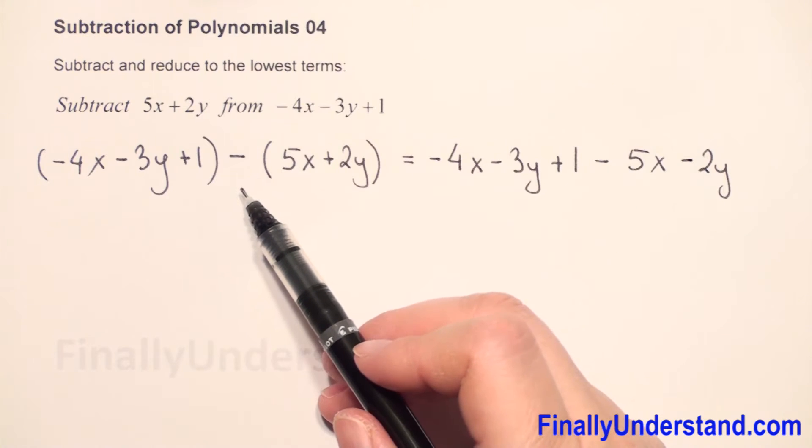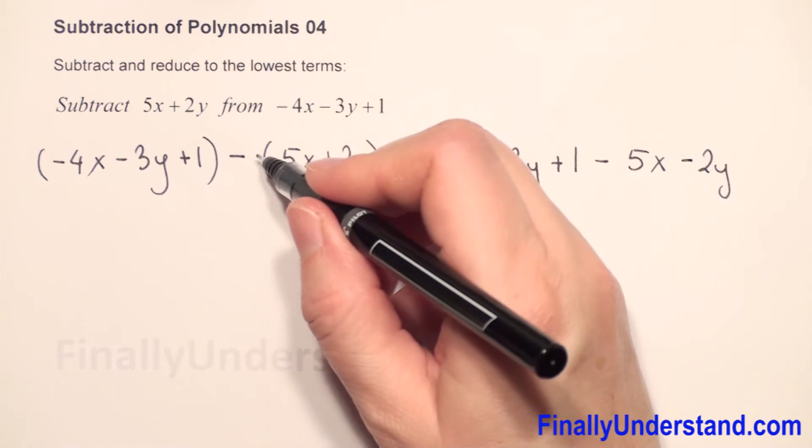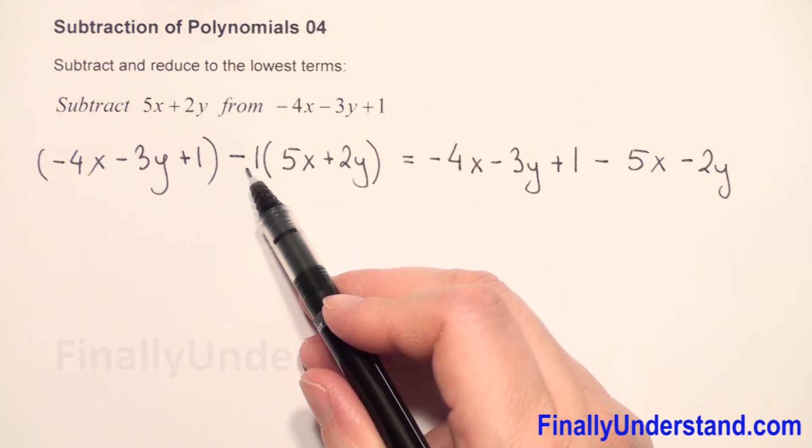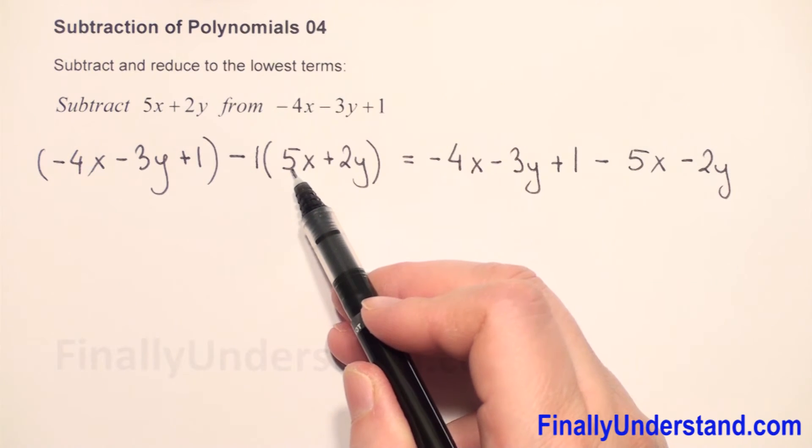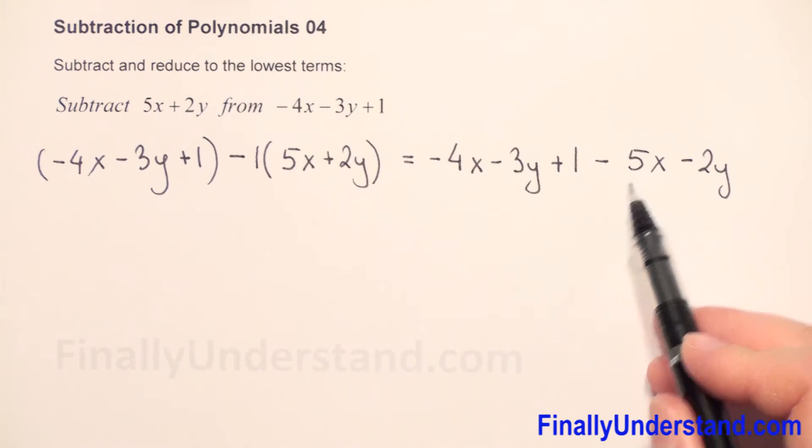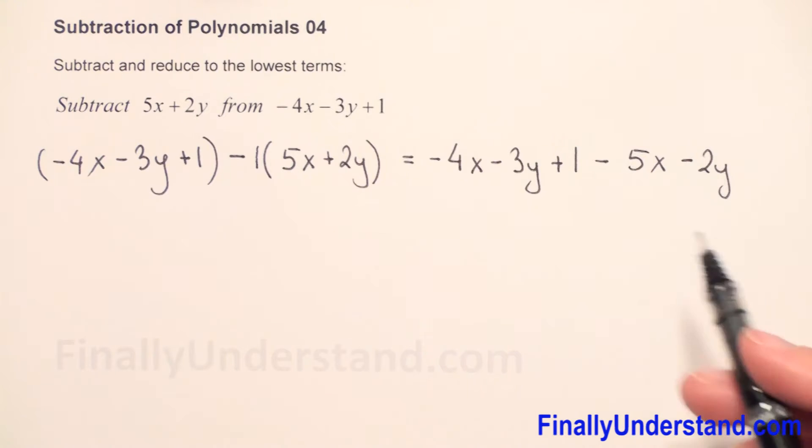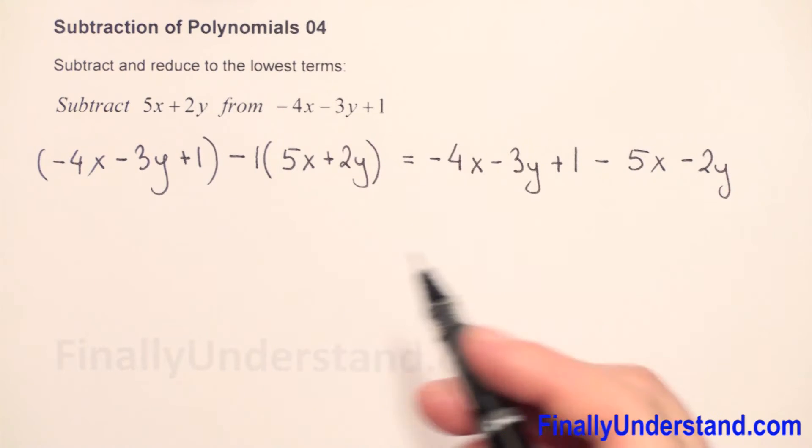Or we can explain this as having an invisible negative 1 here. A negative number times positive gives negative always. Negative times positive is negative. That's why we have this negative sign. Now we have to combine the like terms.